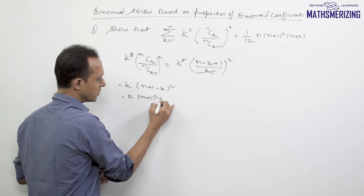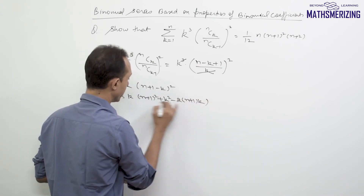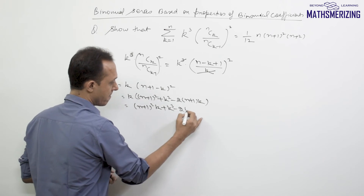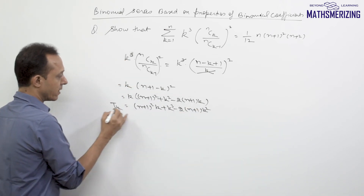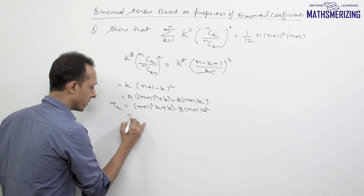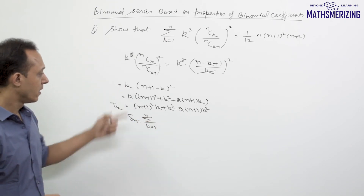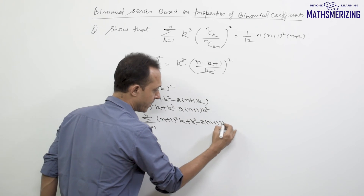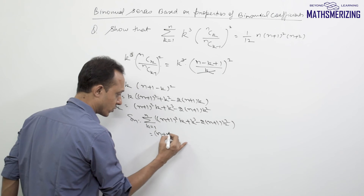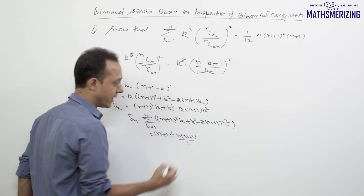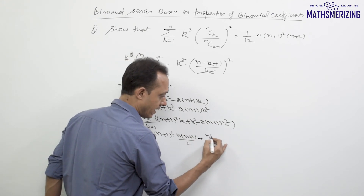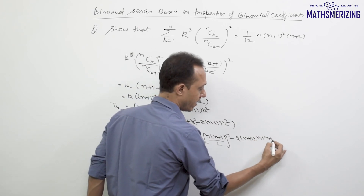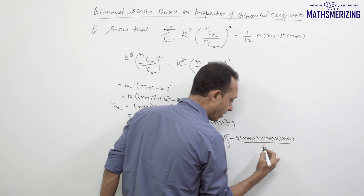Expanding (n+1-k)²: the general term becomes k·(n+1)² + k³ - 2(n+1)·k². Taking the summation from k=1 to n: (n+1)²·Σk + Σk³ - 2(n+1)·Σk². Substituting standard formulas: (n+1)²·n(n+1)/2 + [n(n+1)/2]² - 2(n+1)·n(n+1)(2n+1)/6.